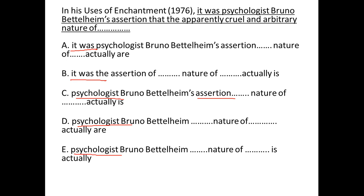Look at the part before the underlined portion. It says: 'In his Uses of Enchantment, 1976.' So this is a modifier. After the comma, we'll have the subject. The subject has to be something to which 'his' can refer — it has to be a person.